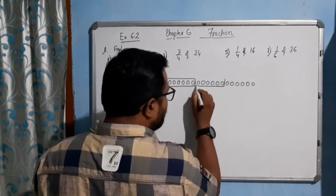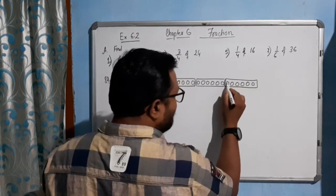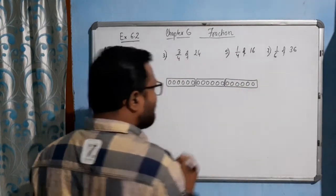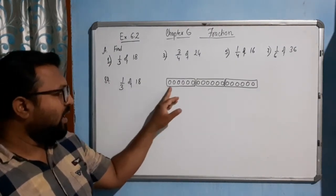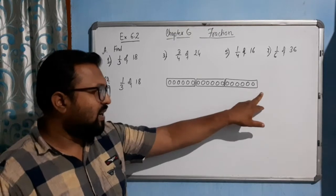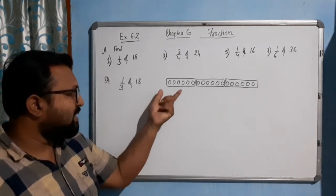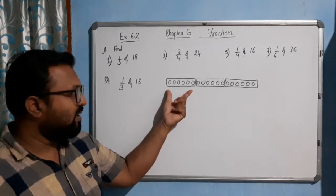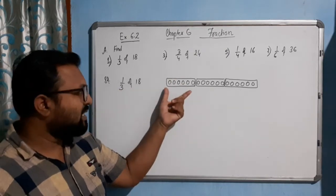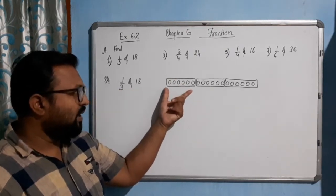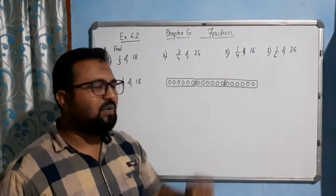This one is 1 part. This one is 1 part — 1, 2, 3, 4, 5, 6. And this one is 1 part. So you can understand here: 18 balls are divided into 3 equal parts. And 1 by 3 means this will be your 1 by 3 — how many balls? 6 balls will be 1 by 3 of 18, out of 18 balls.